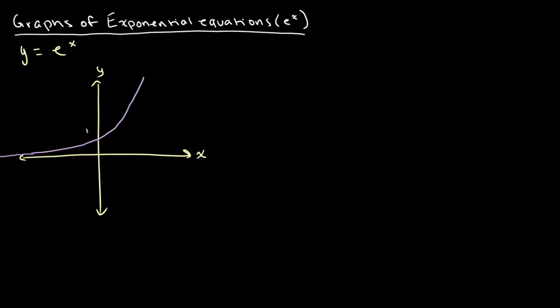So now I'll explain to you why this graph looks the way that it does. Over here, this is our point where x is equal to 0, or our y-intercept. We see that if we plug 0 into our equation — e to the power of 0 — we get the value of 1. Hence, we have our value of 1 over here.